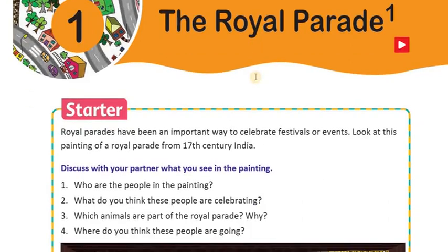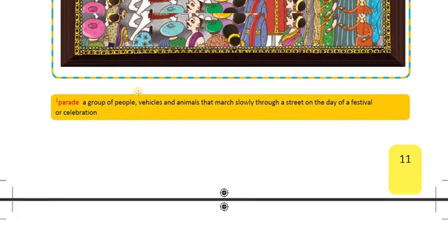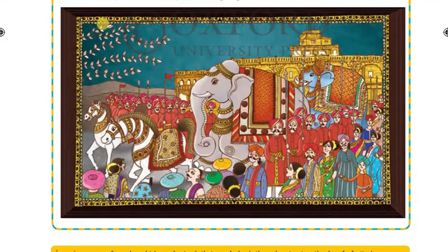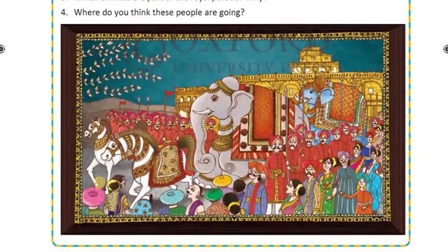The Royal Parade — what is the meaning of 'parade'? A parade is a group of people, vehicles and animals that march slowly through a street on the day of a festival or celebration. Let us see this picture. There are some animals like elephants and horses, some soldiers and common people.